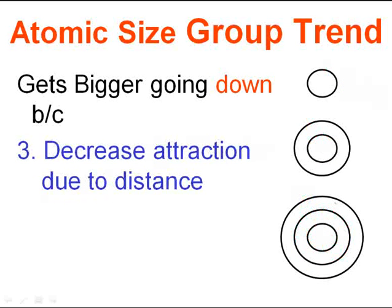The last reason why my atom gets bigger going down a group is because my attraction between protons and electrons is decreasing, mainly due to distance. My protons and electrons are pretty close by in smaller atoms, so there's a very strong attraction. As I go down a group I add more energy levels, and my electrons on the outer edge are definitely farther away. As I continue to go down, the distance between the nucleus and the perimeter of my cloud is increasing, and as you increase your distance, you decrease your attraction.